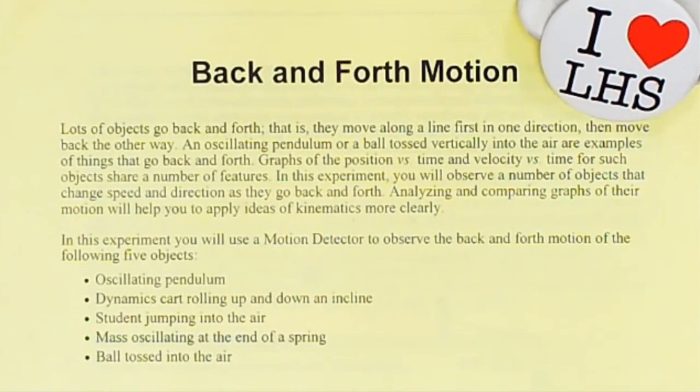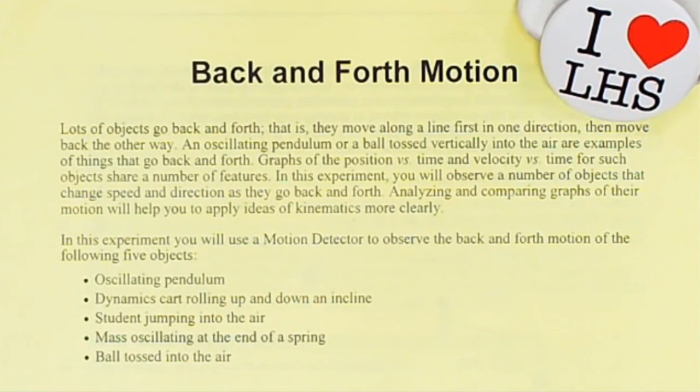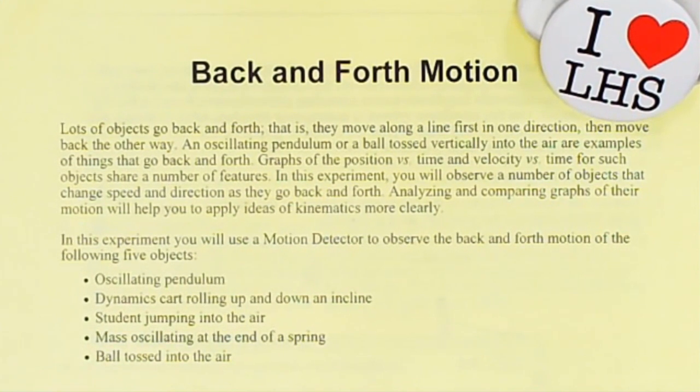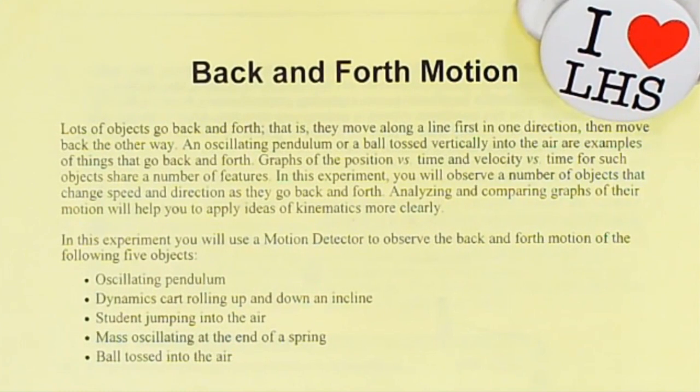Lots of objects go back and forth. That is, they move along a line first in one direction, then move back the other way. An oscillating pendulum or a ball tossed vertically into the air are examples of things that go back and forth.